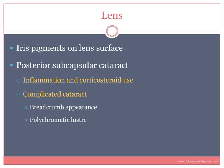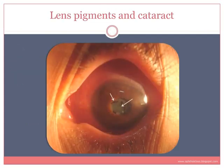Any cataract that occurs due to pathology in the eye is called a complicated cataract. The two characteristic features seen on slit lamp are breadcrumb appearance and polychromatic luster. This photo shows lens pigments arranged in a circular fashion over the lens because the pupil, which was miotic and constricted and adhered to the lens, is now dilated but has left pigments on the lens. The cataract is present in the pupillary area — this is a complicated cataract.